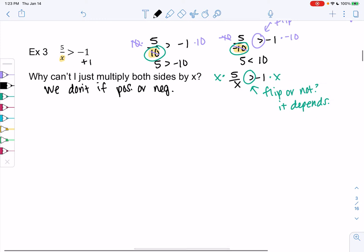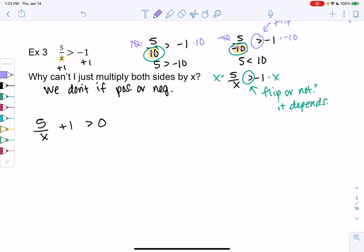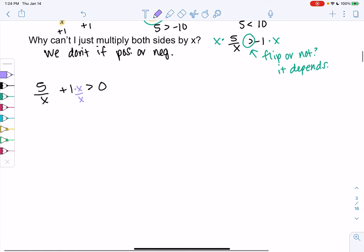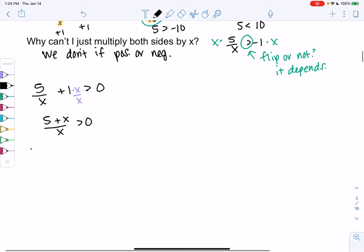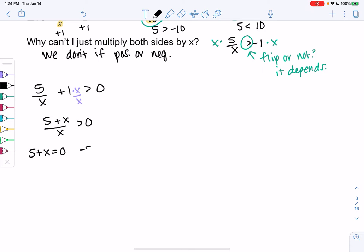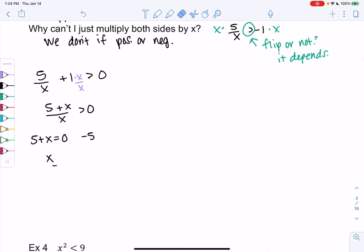I'm going to add 1 to both sides and follow the zero trick. So 5 over x plus 1 is greater than 0. I'll find a common denominator, which would be x, so x over x. The reason I'm doing this is it's going to allow me to factor. We end up with 5 plus x over x is greater than 0. We're going to solve the numerator and denominator. 5 plus x equals 0 gives me negative 5 as a zero, and x equals 0 is just 0.